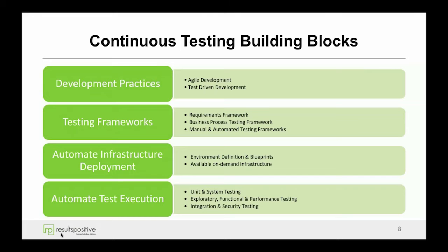One of the key areas we see is test-driven development, and starting to apply that methodology in organizations really helps achieve the DevOps goal and objective. It also helps with continuous testing specifically around continuous unit testing. We'll talk a bit more about what test-driven development is and how that helps organizations with their DevOps journey. Next, a key building block here, which really helps to address the need for reuse of testing assets, is setting up various testing frameworks.